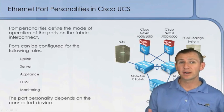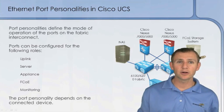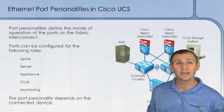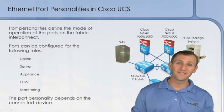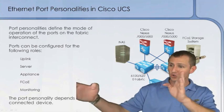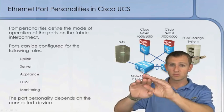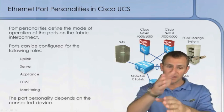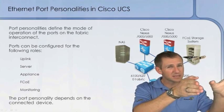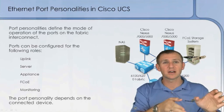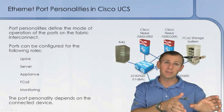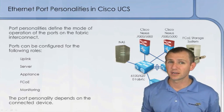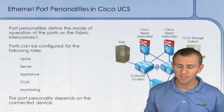One of the differences, as you may already know, the 6100 — for instance the 6120 — is going to be fixed with 20 ports, 20 fixed ports. And then we'll have possibly additional ports off to the side that are going to be for fiber channel if we were to install a generic expansion module.